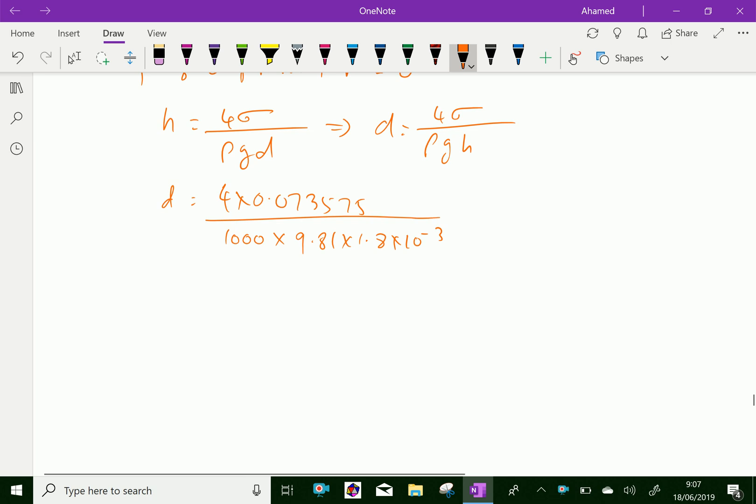Now let us calculate this using a calculator. 4 times 0.073575, over 1000 times 9.81, times 1.8 times 10 to the minus 3.